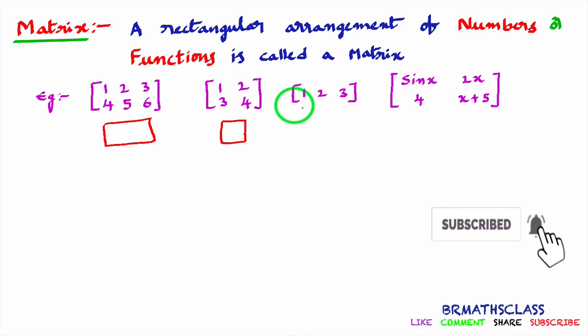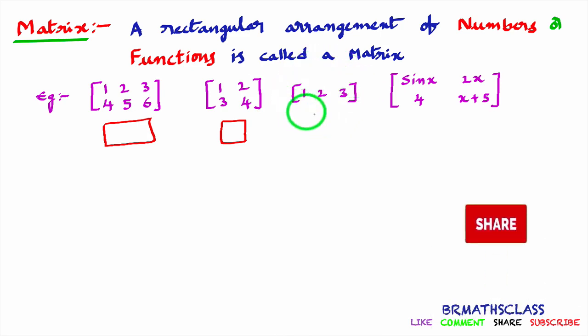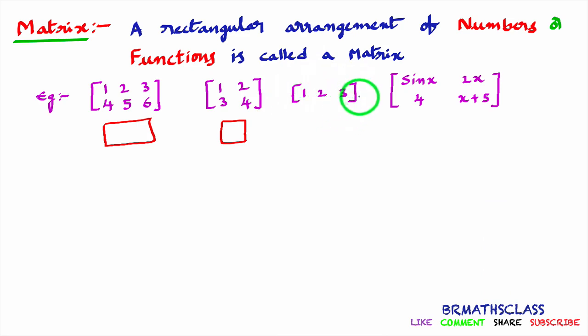Observe this. Is it a matrix or not? Rectangular arrangement of numbers — yes, this arrangement is a rectangular arrangement. So this is an example of a matrix.